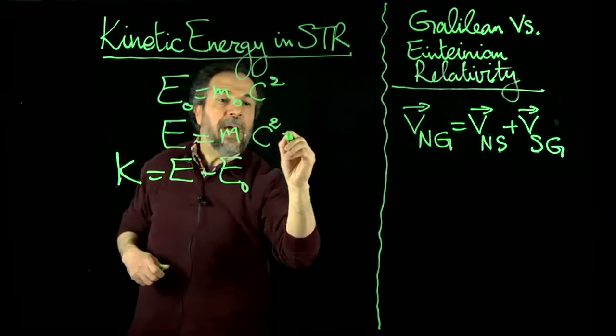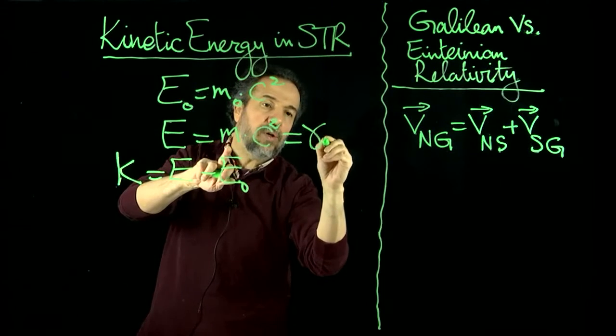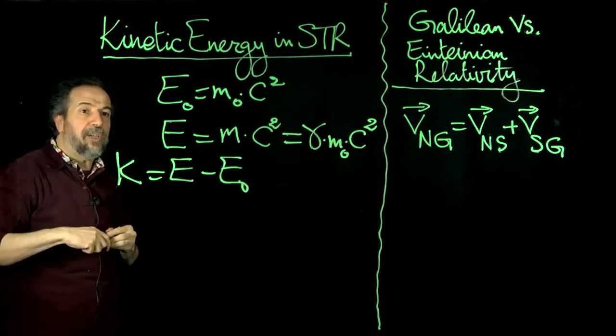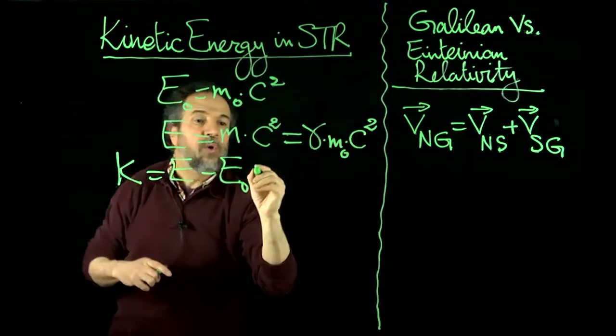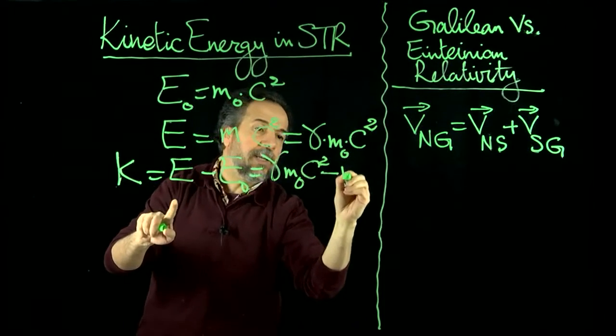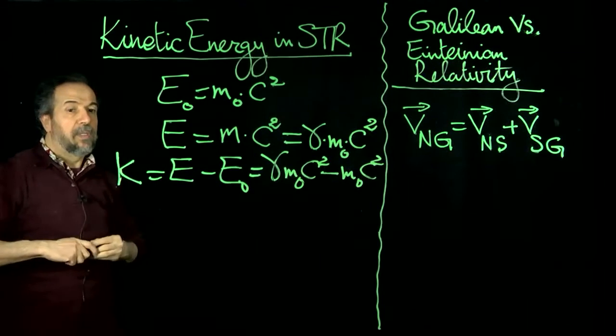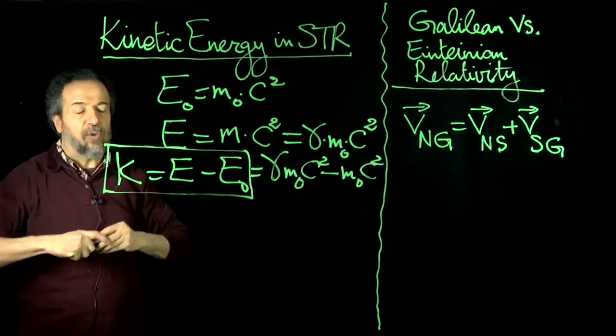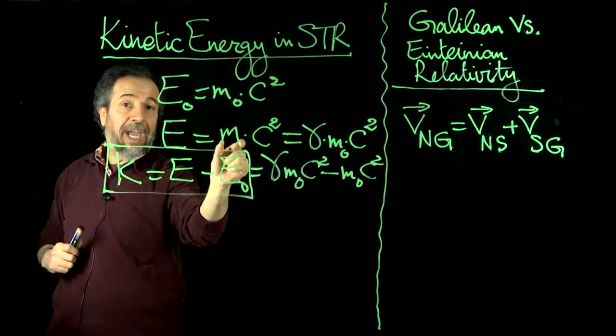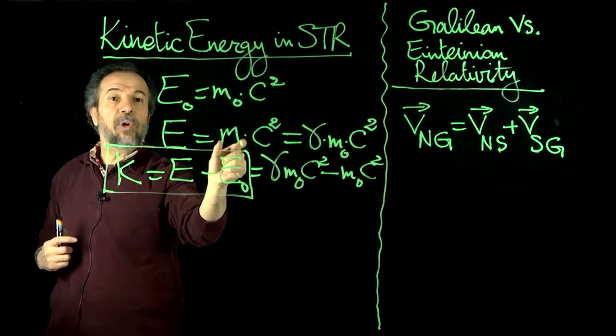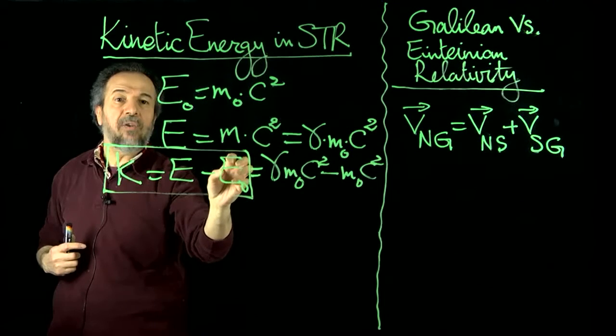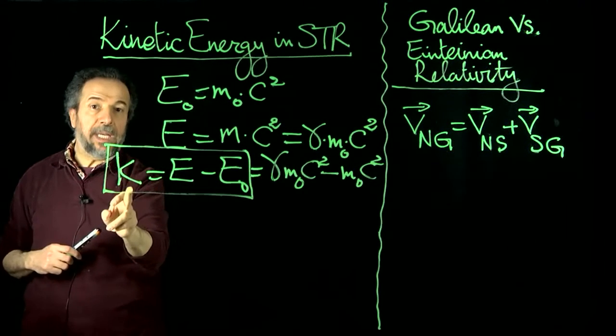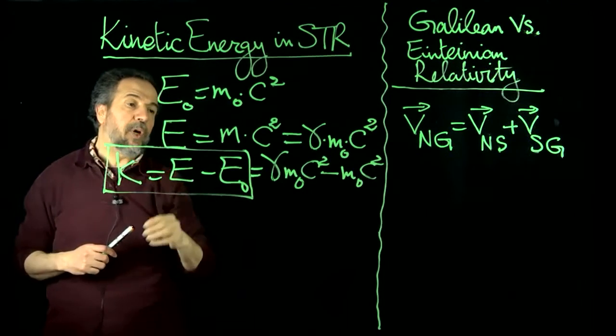But we know that the relativistic mass is supposed to be gamma, the Lorentz factor, multiplied by M0, and then multiplied by C². So, if we substitute these, we should end up with γM0C² minus M0C². The most important thing to realize is that kinetic energy in special theory of relativity has to be the total energy that the object has due to whatever relativistic mass it has at the time minus whatever the rest energy is. When you do the subtraction of those two, you will be able to figure out the kinetic energy. So, rest energy, total energy, kinetic energy. Please keep that in mind.